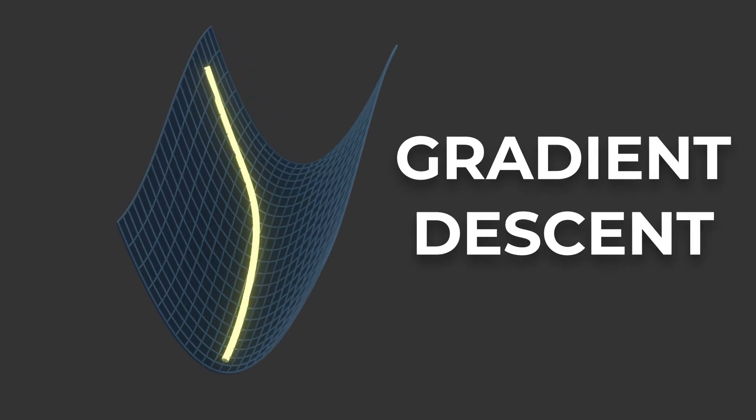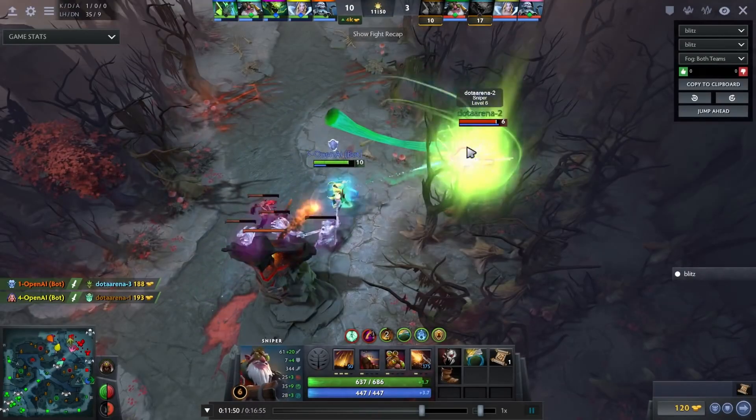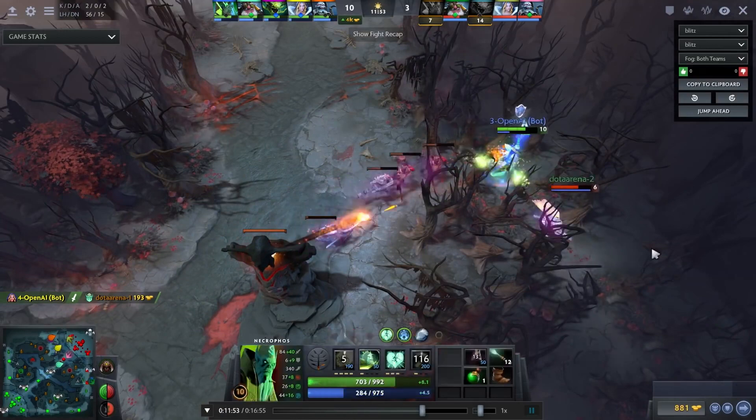Gradient descent is the process by which machines learn how to generate new faces, play hide-and-seek, and even beat the best humans at games like Dota. But what exactly is gradient descent?